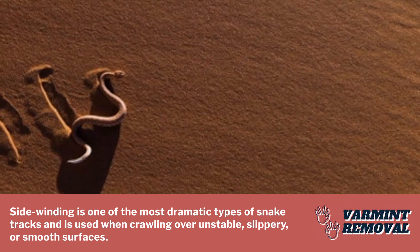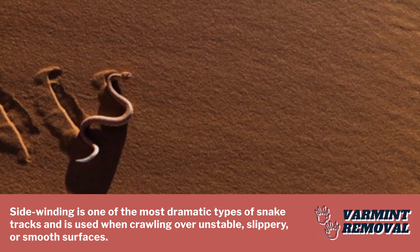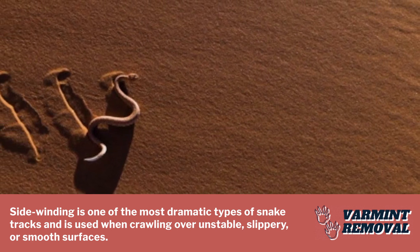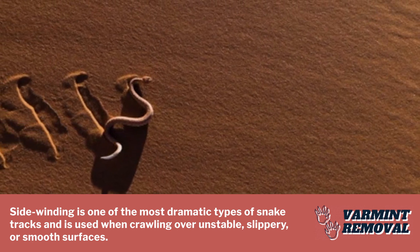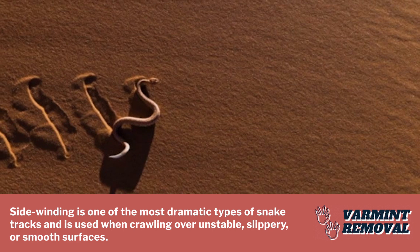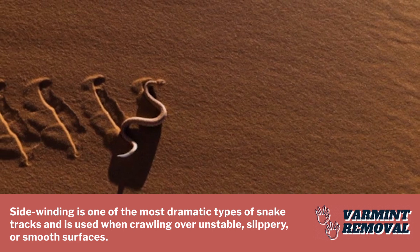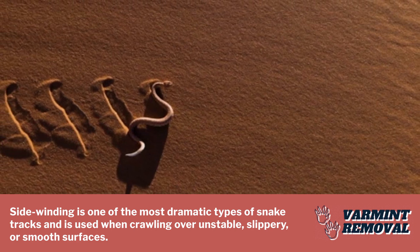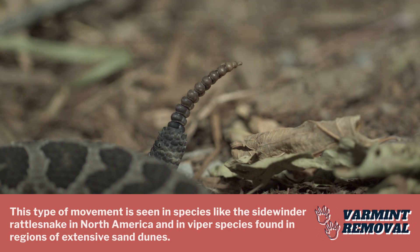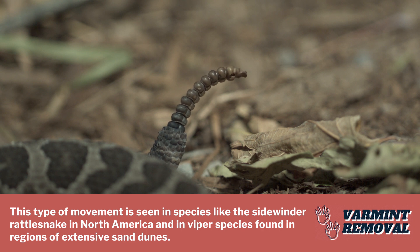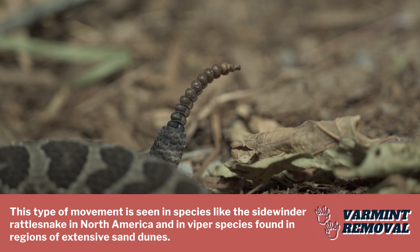Sidewinding is one of the most dramatic types of snake tracks and is used when crawling over unstable, slippery, or smooth surfaces. This type of movement is seen in species like the sidewinder rattlesnake in North America and in viper species found in regions of extensive sand dunes.